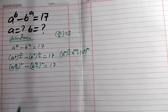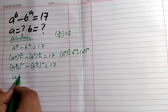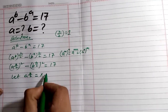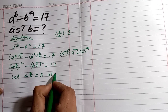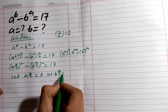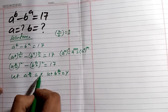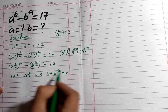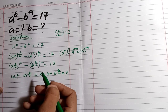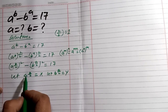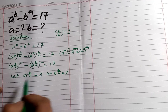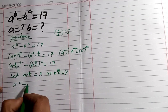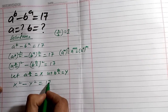Now we let a^(b/2) equal x, and b^(a/2) equal y. This substitution makes it easiest to find the values of x and y, and from those we can find a and b. So we can write x squared minus y squared equals 17.